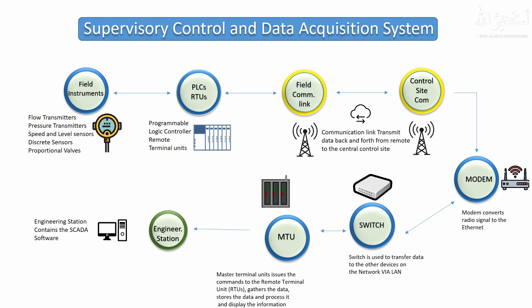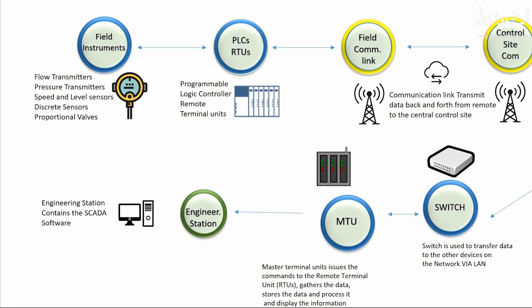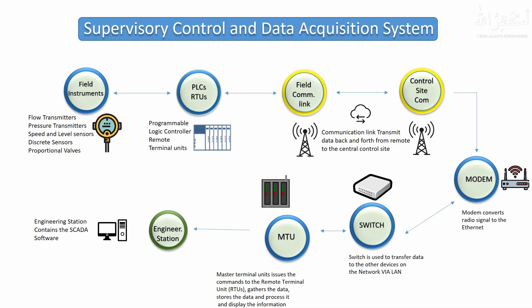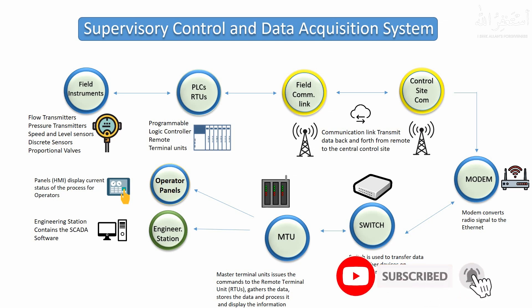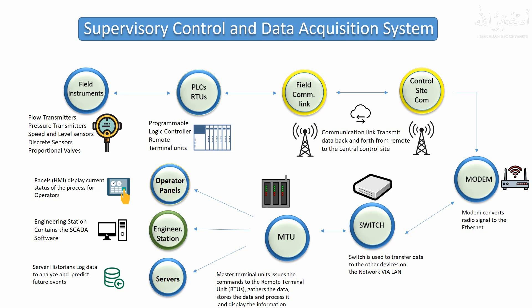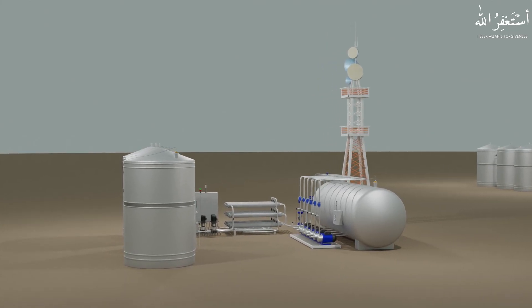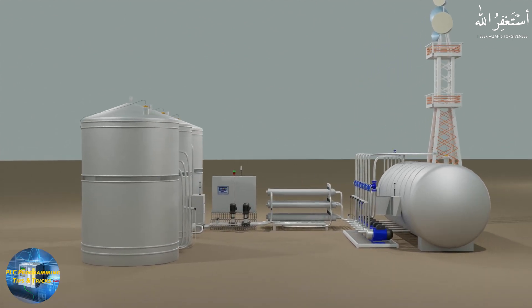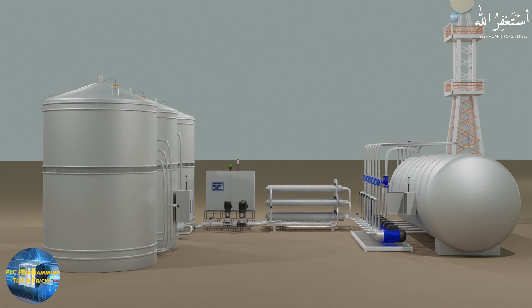An engineering station is connected to the MTU. This engineering station has the SCADA software running on it, and if any changes to the process are required, they can be done here. The Master Control Unit displays the data of the current process on operator display screens. Finally, the Master Control Unit sends data to the server historian. These data historians continuously log the data and keep it safe. This data is essential for checking the performance of field devices and predicting problems that might occur in the near future.